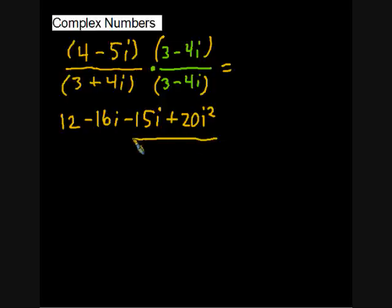And you might be thinking that we're going to do something with that i squared. You're right. On the bottom, we'll FOIL. 3 times 3, that's 9. Then we do minus 12i plus 3 times 4i plus 12i. And then minus 16i squared.